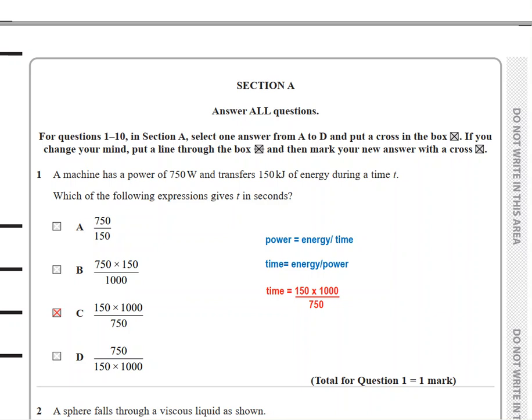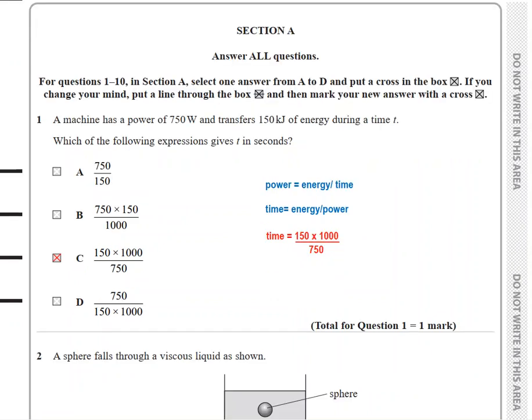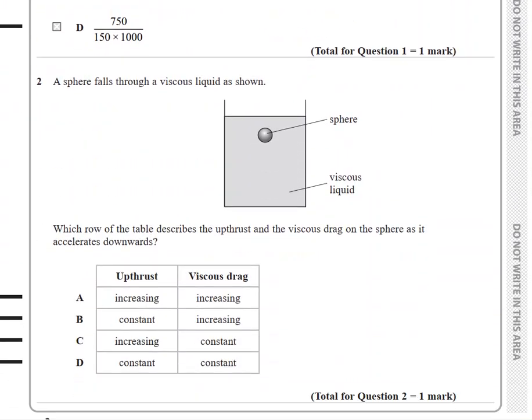The second question says a sphere falls through a viscous liquid as shown. Which row of the table describes the upthrust and viscous drag on the sphere as it accelerates downward?